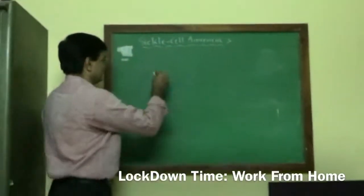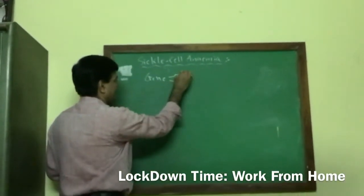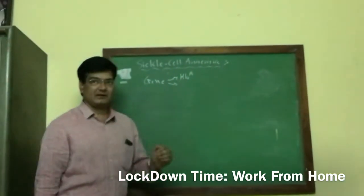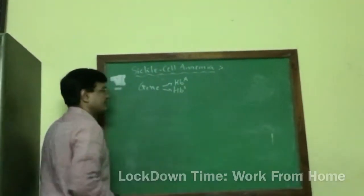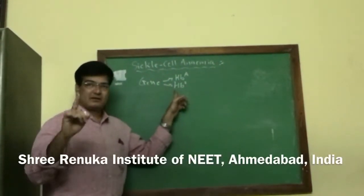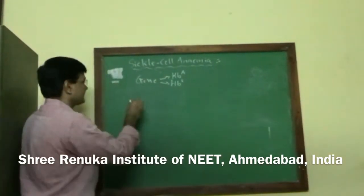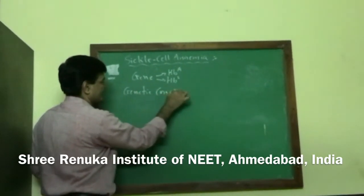The gene responsible for hemoglobin synthesis is HBA, which is generally dominant in condition. Its allelic gene is HBS - it is a defective gene and it is in recessive condition.